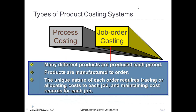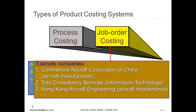A company would use a job order costing system when many different products are produced each period. The products are usually manufactured to customers' specifications and are unique in nature. The unique nature of each order requires tracing or allocating costs to each job and maintaining cost records for each job. Companies that may benefit include Boeing, Tata Consultancy, and Walt Disney Studios. Tata Consultancy is perhaps the largest information technology service provider in Asia, working on projects unique to customer needs.